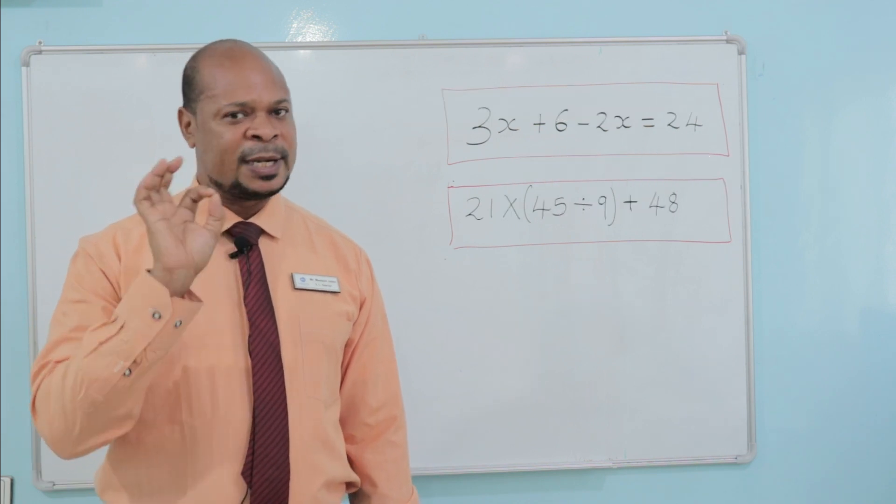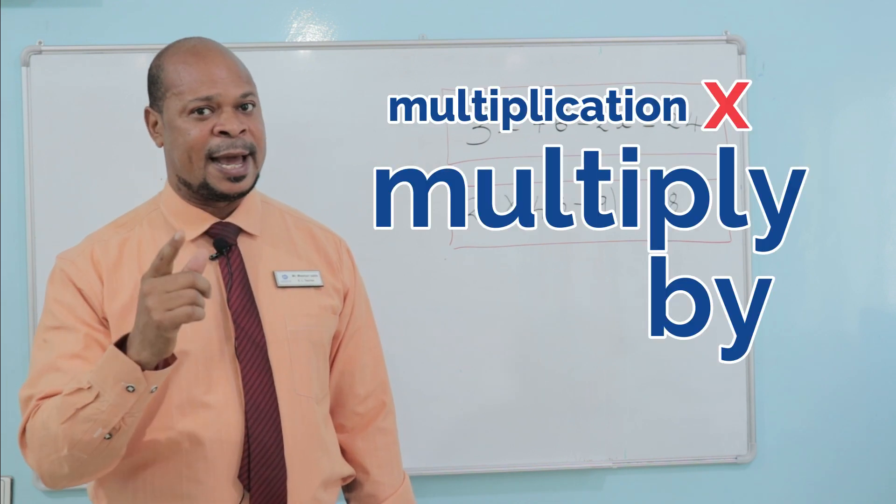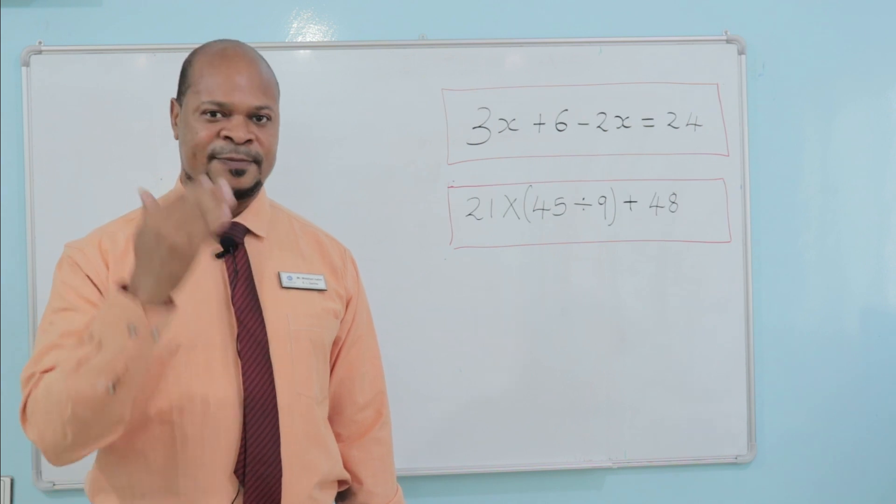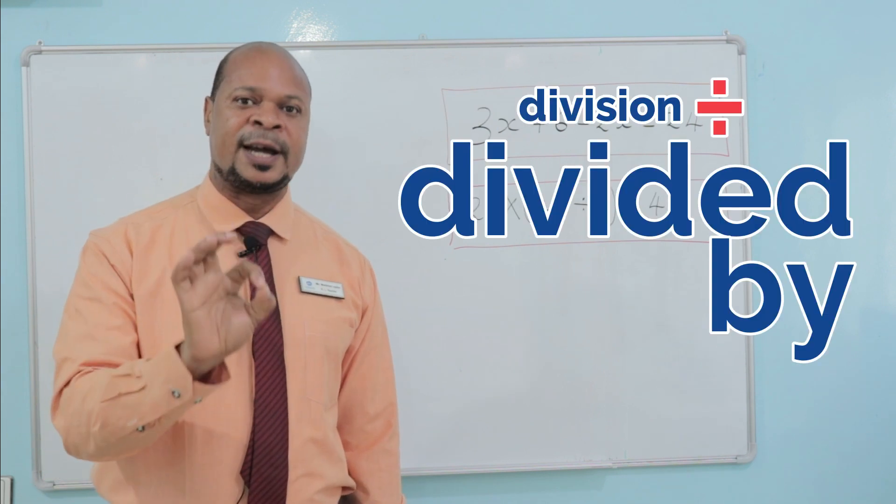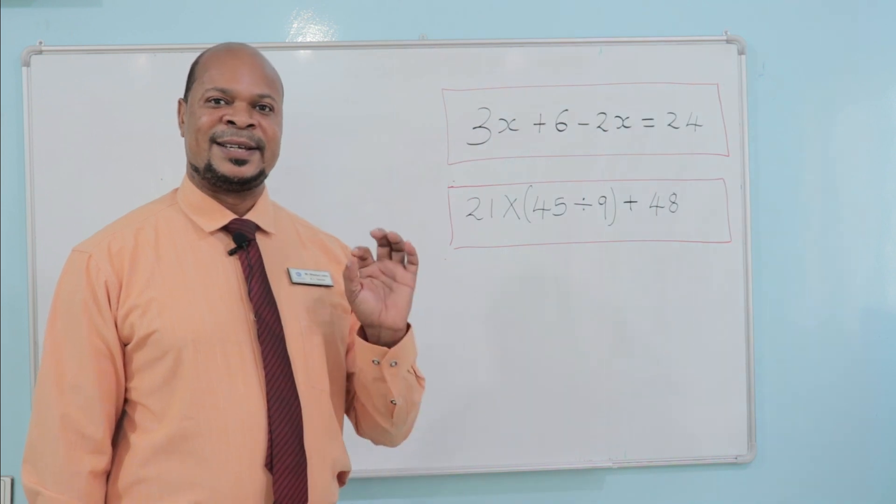The verb we use for multiplication is multiply by, and the verb we use for division is divide by.